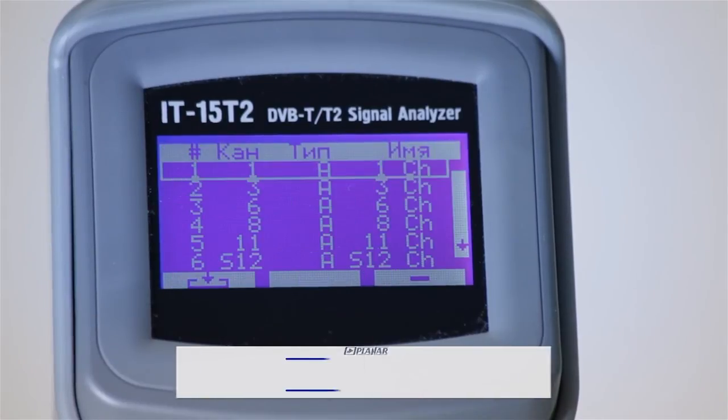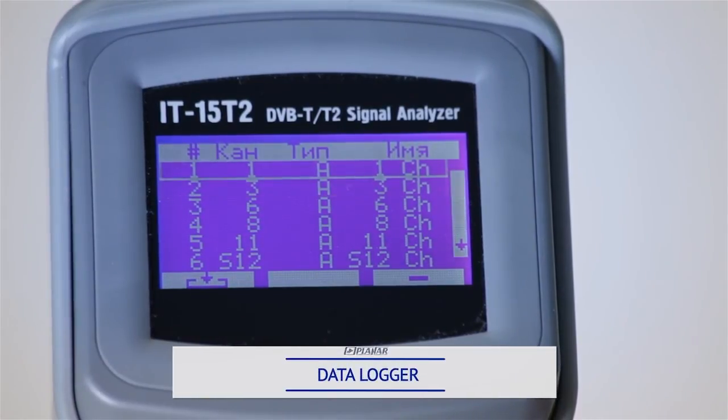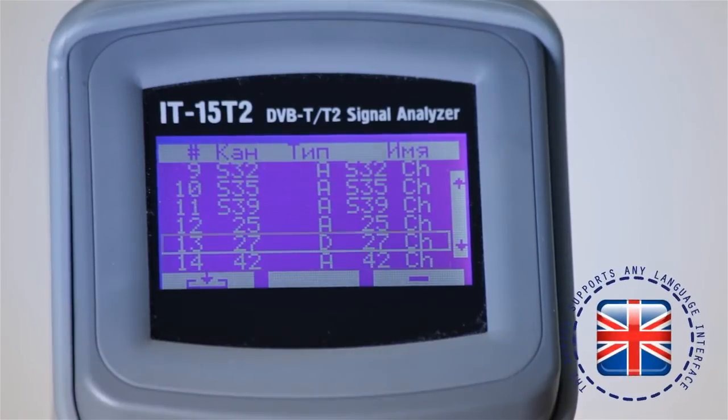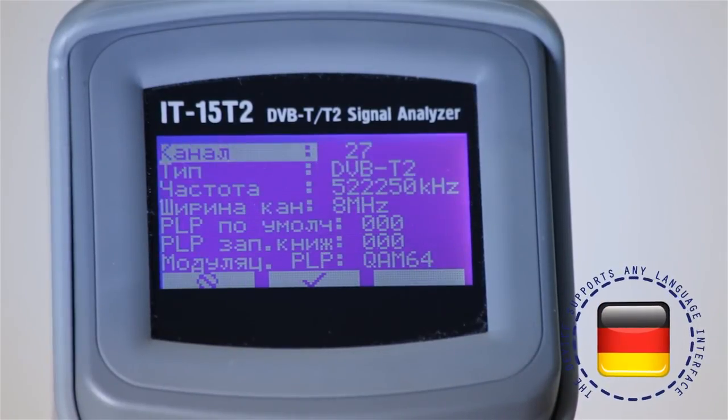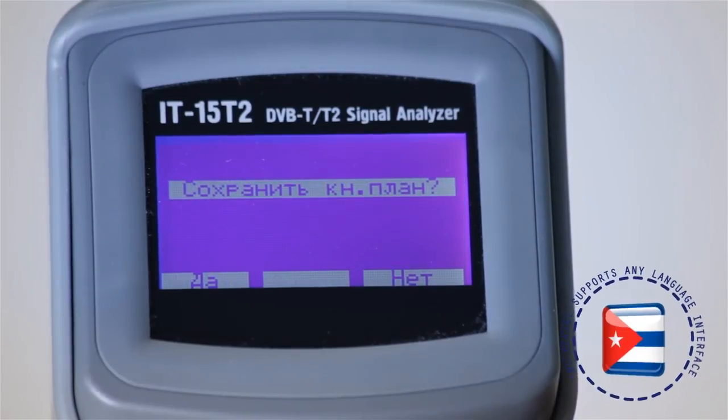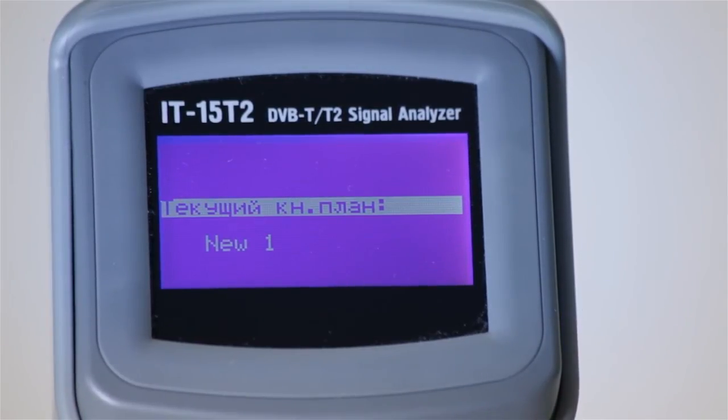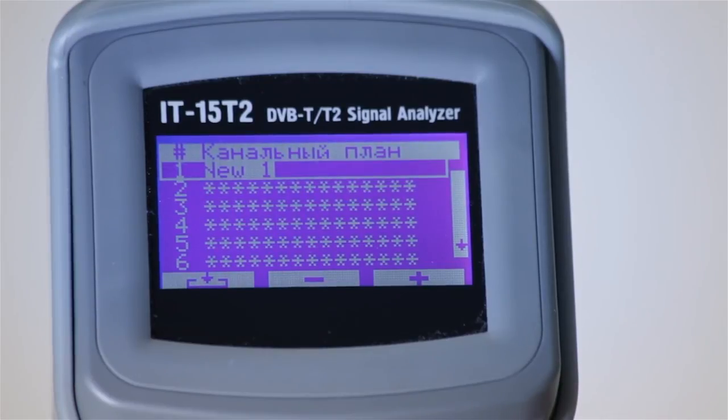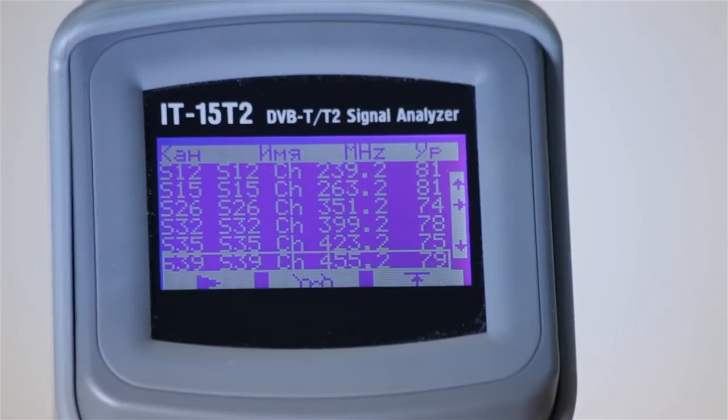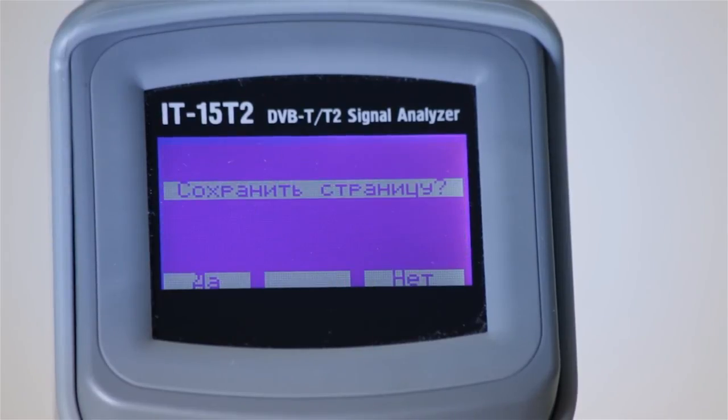Now let's have a look at the data logger functionality. The data logger is used for automation of the measurement process. First, the instrument creates a channel plan, which is a set of channel parameters for the network. It can be created automatically. Then you can use the channel plan for making measurement results of which are tested against a limit plan. The measurement results are saved in the instrument's memory and can later be analyzed, saved to file, or printed as a report when IT15T2 is connected to a PC.